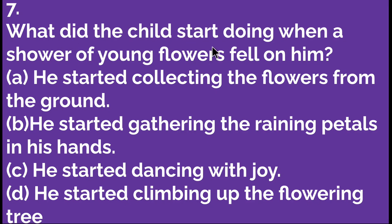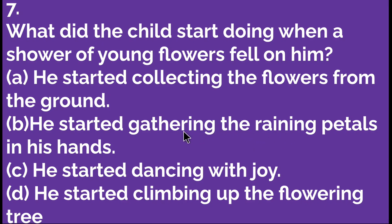What did the child start doing when a shower of young flowers fell on him? Option A: he started collecting the flowers from the ground. Option B: he started gathering the raining petals in his hands. Option C: he started dancing with joy. Option D: he started climbing up the flowering trees. B is the right answer — he started gathering the raining petals in his hands. So let's move to the next question.